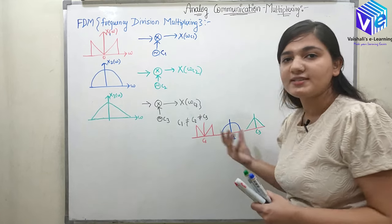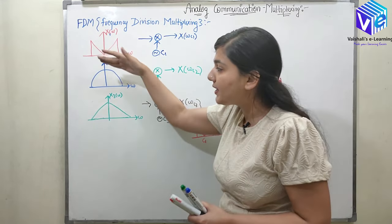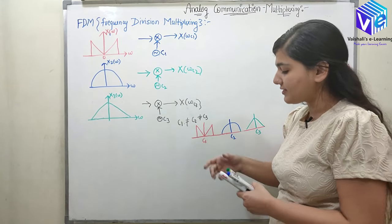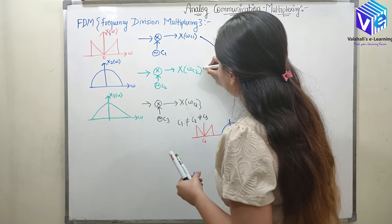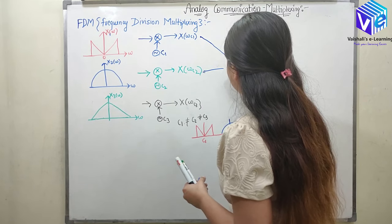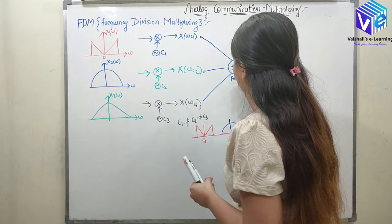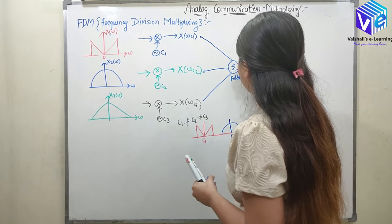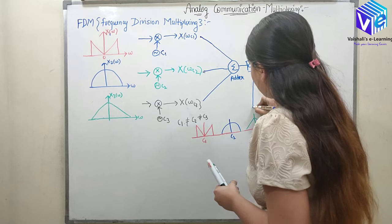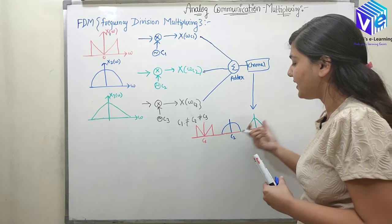So I have provided a separate band of frequency over which each separate signal can be transmitted. I have divided the frequency into separate bands and now all of them are added. These signals are added with the help of an adder, and this is then transmitted to the channel. In the channel, this combined signal is present, and these signals are not mixing with each other because they are at different frequency levels.